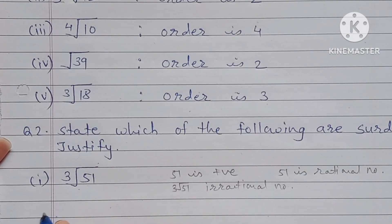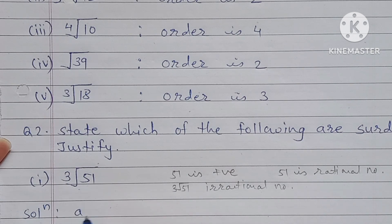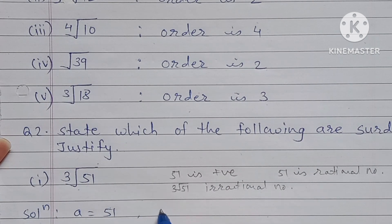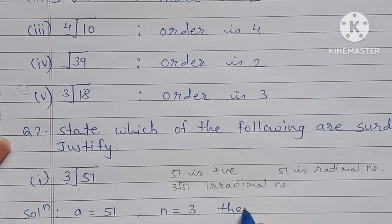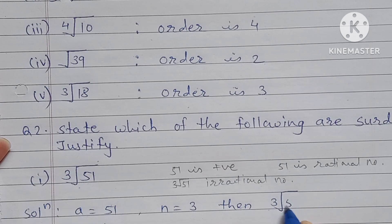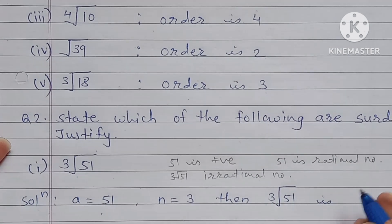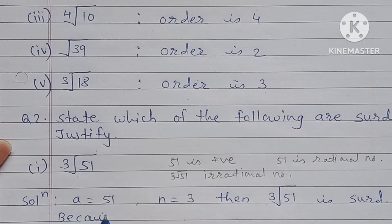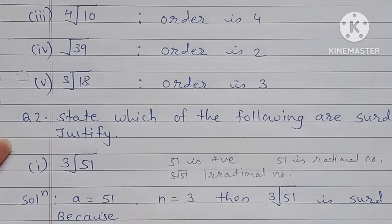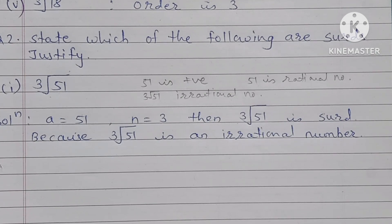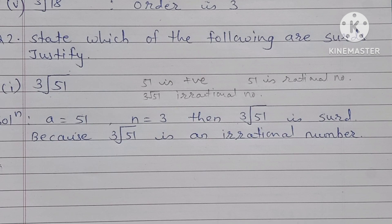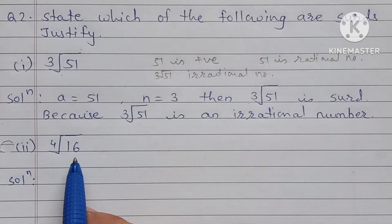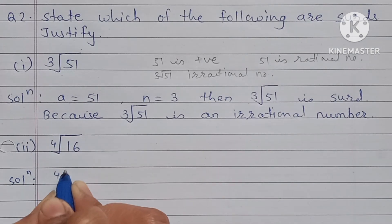Here a is 51 and n is equal to 3, then cube root of 51 is a surd — because cube root of 51 is an irrational number.